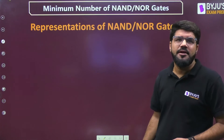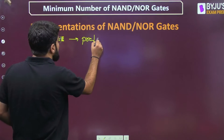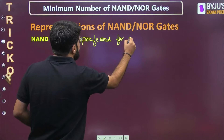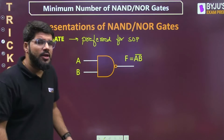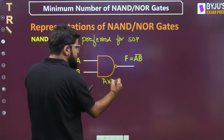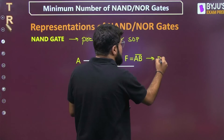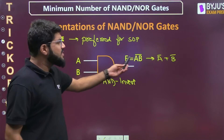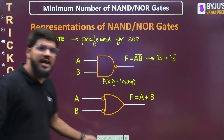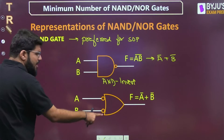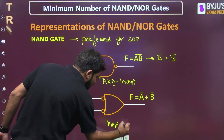NAND gate is usually preferred for SOP functions. The normal representation is A·B whole bar — we AND first, then there is a bubble for inversion, so we call it AND-invert. By De Morgan's law this equals A̅+B̅. Since it equals A̅+B̅, we can also implement it using an OR gate by first complementing the inputs — bubble the inputs and feed to OR gate. This is known as the invert-OR structure, and both are equivalent to the NAND gate.